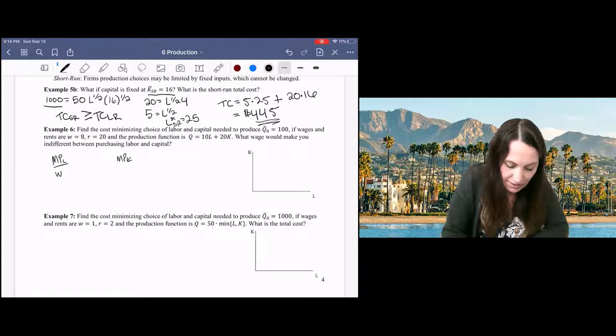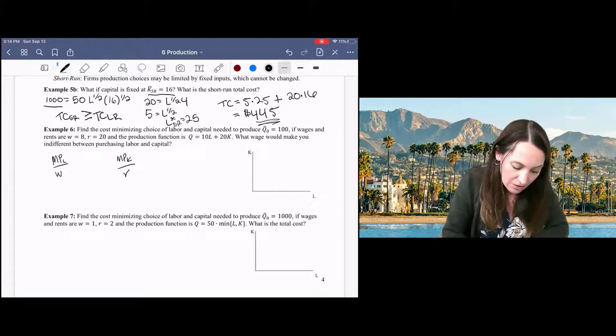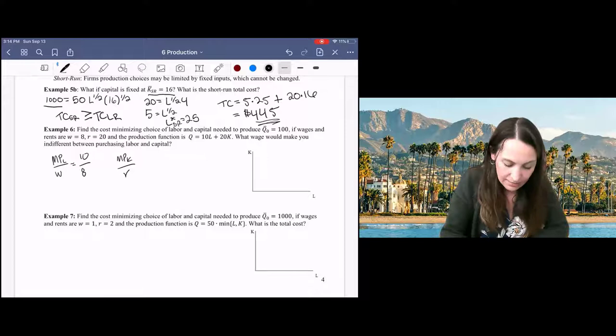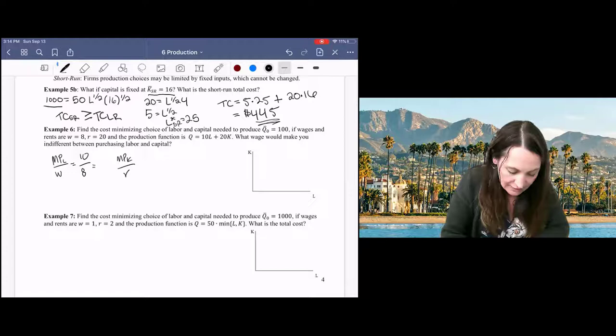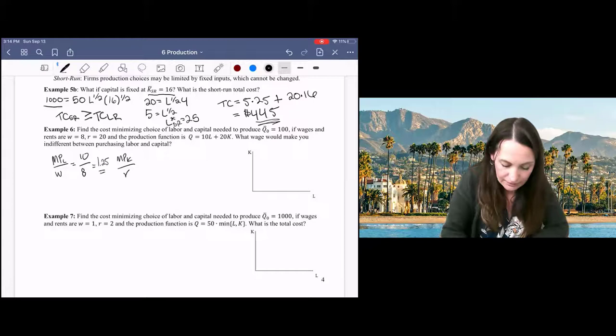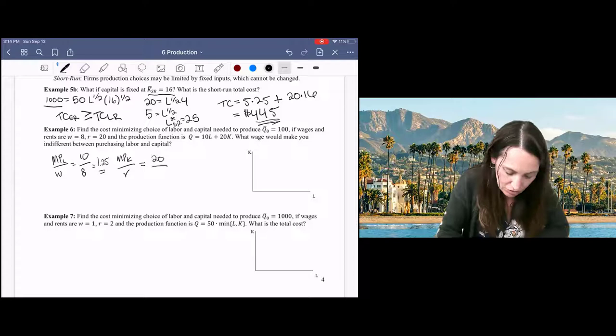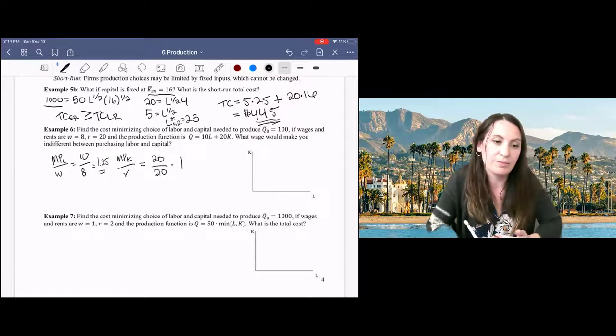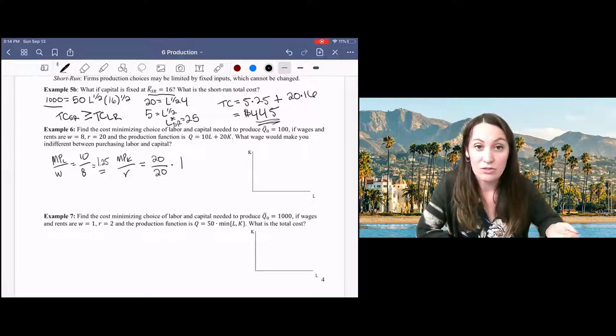So for each unit of labor, our marginal product is 10 units of output, and the cost of labor is $8 per unit. So that gives me $1.25. And then my marginal product of capital is $20 over the cost of capital is $20 per unit. So that gives me $1 per unit of output, basically. Whereas labor produces $1.25 units of output per dollar.